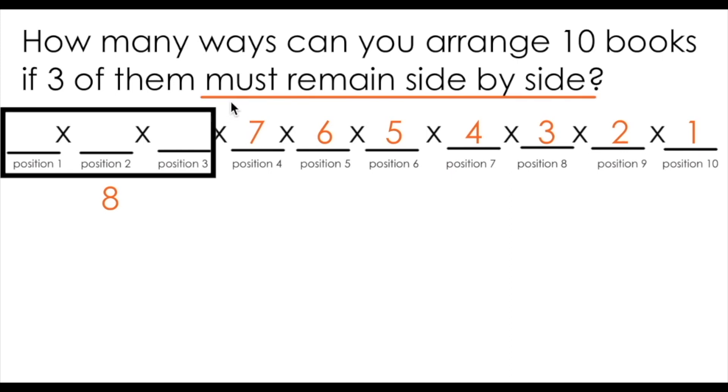The question does state that these books must remain side by side, but it does not state that there is one possible way this can happen. Thinking about the three positions available for the three books that must remain side by side, if I look at the first position, I know there are three available books that can fill that spot.